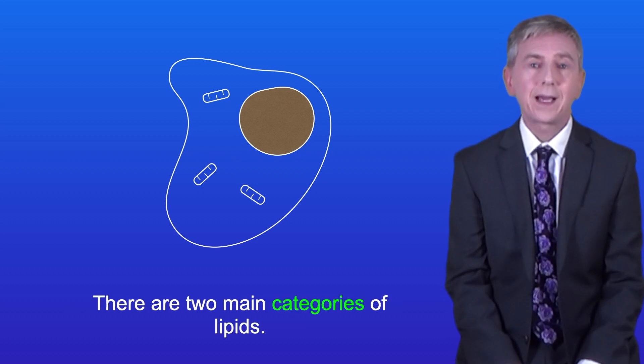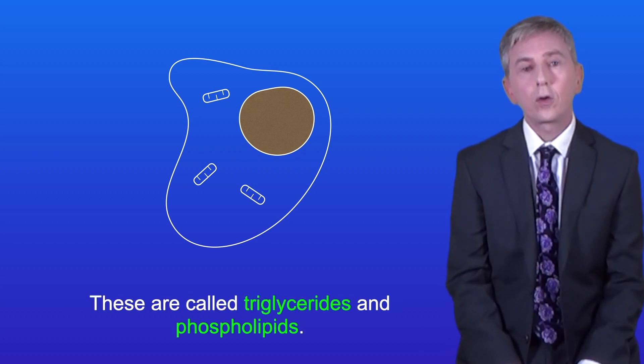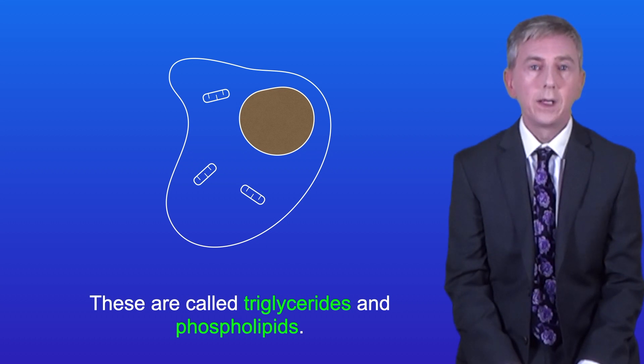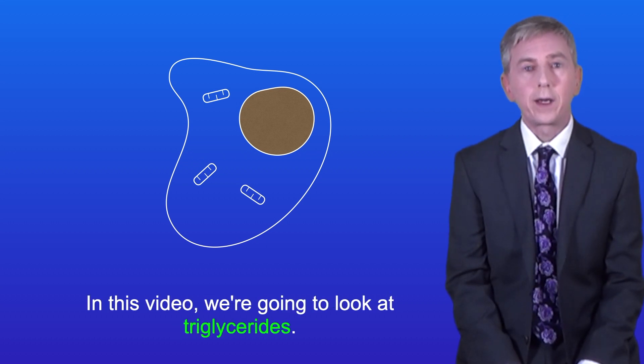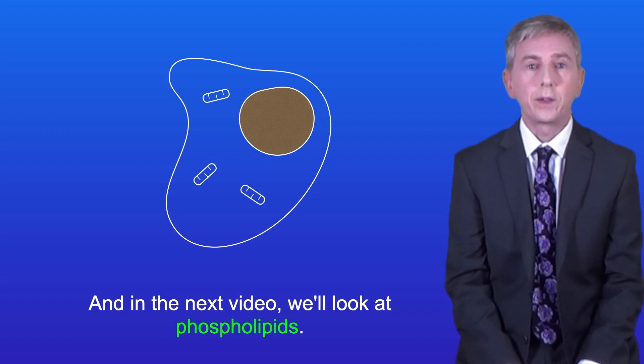There are two main categories of lipids: triglycerides and phospholipids. In this video we're going to look at triglycerides, and in the next video we look at phospholipids.